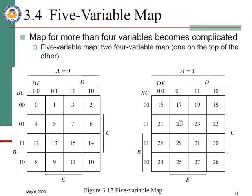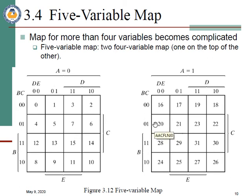In a four variable K-map, there are two variables on each side. But when we have a five variable K-map, there is one additional variable. To construct a five variable K-map, we start by making two four variable K-maps. Then we add the fifth variable to them.